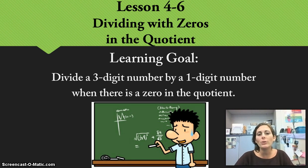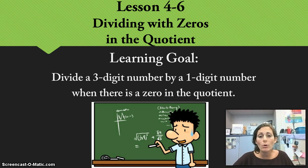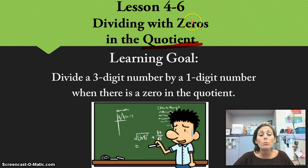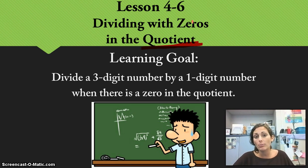Good evening. Tonight you're going to be learning about topic 4-6, which is dividing with zeros in the quotient. Quotient is the answer to a division problem — you need to memorize what that means. You may see several questions where it says, find the quotient to this problem. Quotient means to divide, and the quotient is the answer to a division problem.